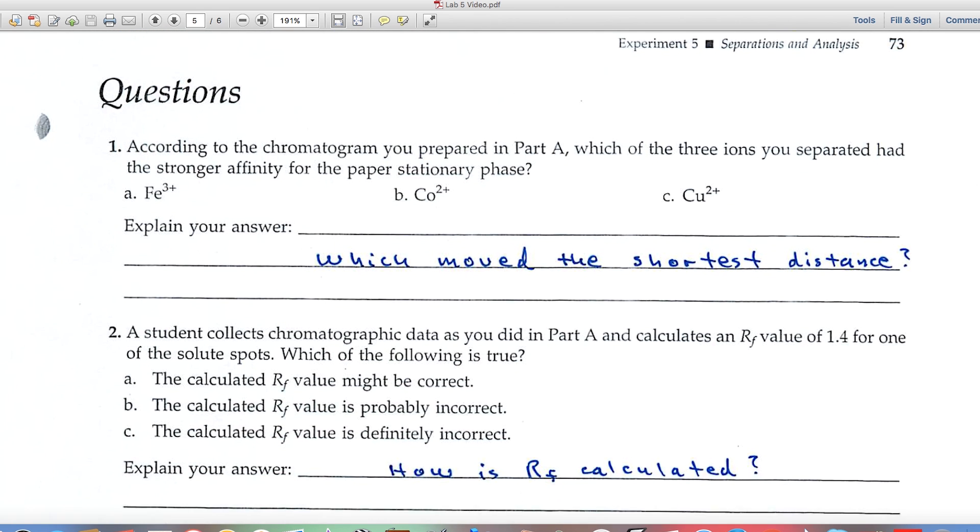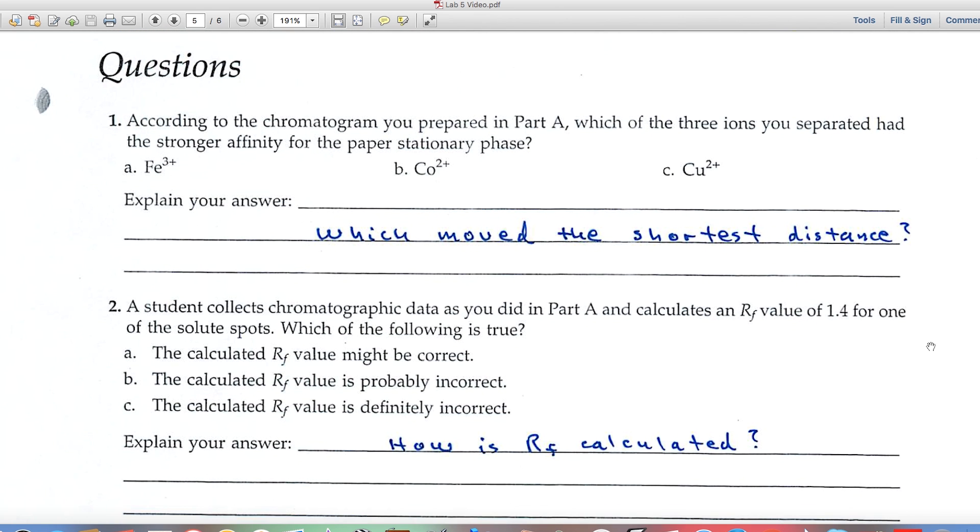Let's look at the questions at the end of the experiment. According to the chromatogram in Part A, which of the three ions you separated had the strongest affinity for the paper's stationary phase? Well, that means that it didn't travel very far if it had a strong affinity for the paper. Those substances that had a strong affinity for the mobile phase would move up the paper a long ways, but here we're looking for the substance that moved the shortest distance.